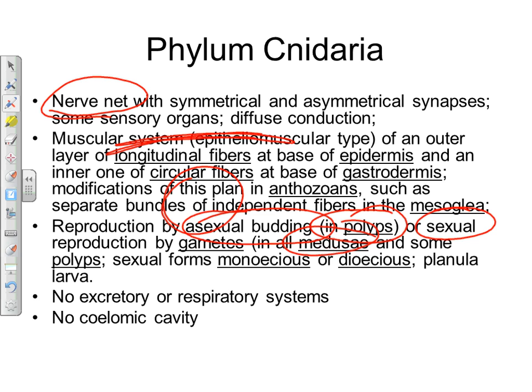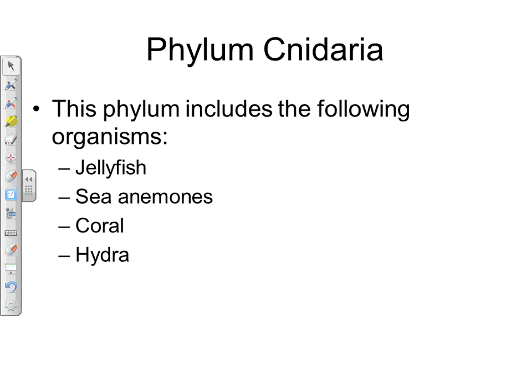Cnidarians have no excretory or respiratory systems; excretion and respiration are handled by diffusion and osmosis. They also lack a central body cavity because they have essentially no organs, making them very simplistic animals. Examples of cnidarians include jellyfish, sea anemones, coral, and a freshwater version called the hydra, which resembles a sea anemone.